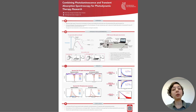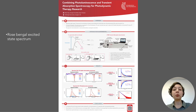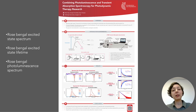This presentation will show you how to use a transient absorption spectrometer to study singlet oxygen generation by Rose-Bengal in solution. We will show you how to characterize the full process using the LP980 transient absorption spectrometer, including the absorption spectrum and lifetime of the Rose-Bengal excited state, the luminescence spectrum of Rose-Bengal, and directly detected luminescence from singlet oxygen.